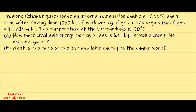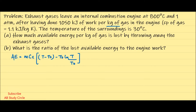We have the available energy formula: AE = mCp(T - T0) - T0 * ln(T/T0). Since it is per kg of gas, mass m can be eliminated, giving us directly: AE = Cp * [(T - T0) - T0 * ln(T/T0)].